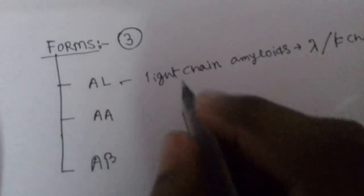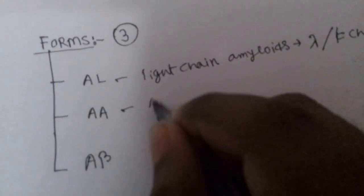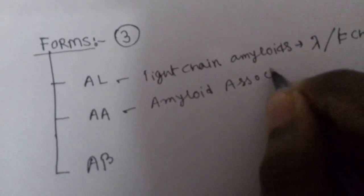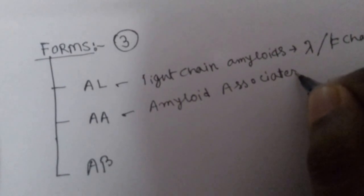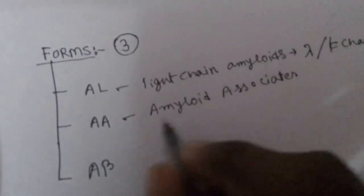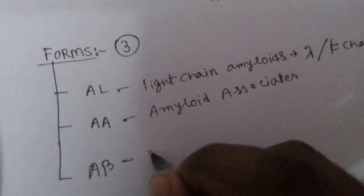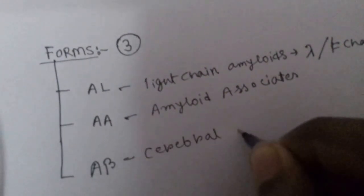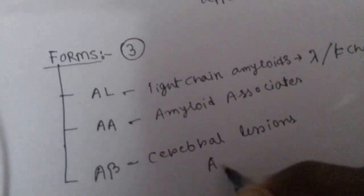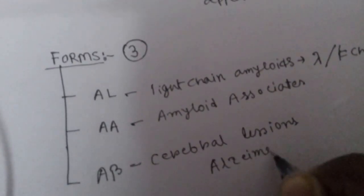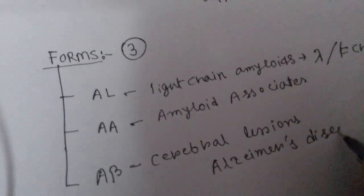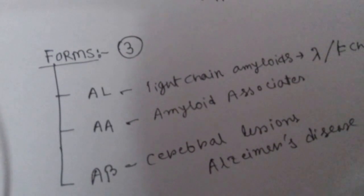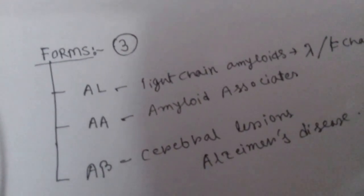AA are amyloid associates. And Aβ is generally seen in cerebral lesions in case of Alzheimer's disease. You can check our video on Alzheimer's disease. We have posted the video where you can get a full idea of Alzheimer's disease.